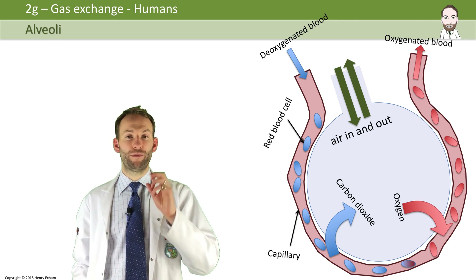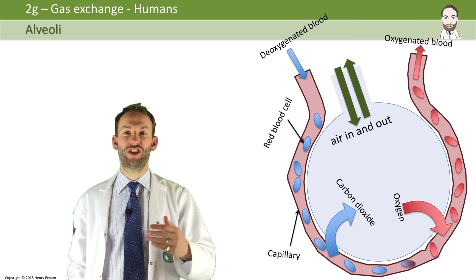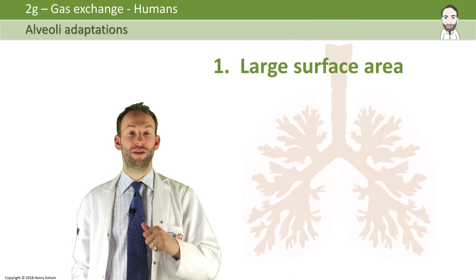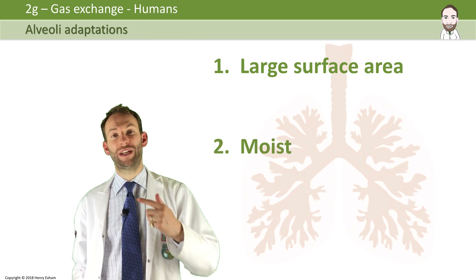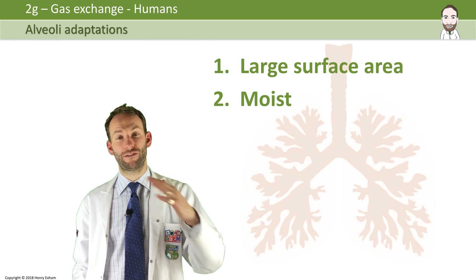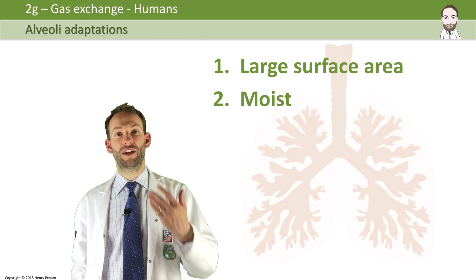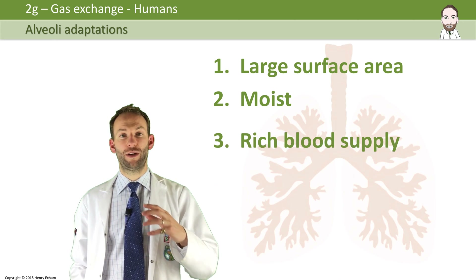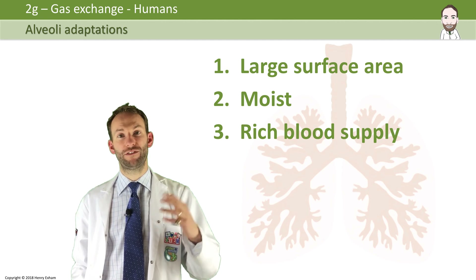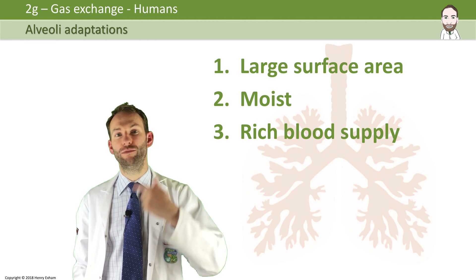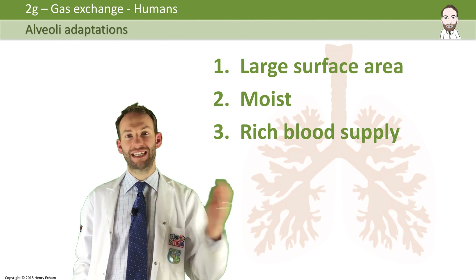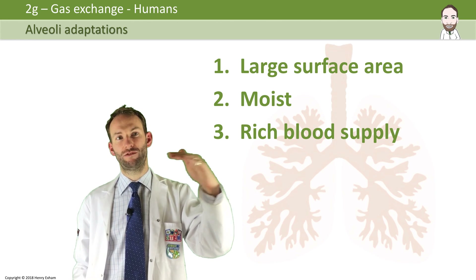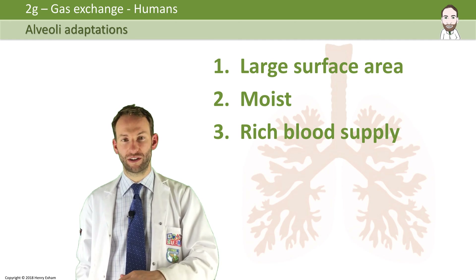Alveoli are perfectly adapted for efficient gas exchange. Number one, they've got a large surface area for diffusion. Number two, they're moist — and when it's moist, the gas diffuses through the moisture and goes even quicker. They've also got an amazing blood supply which helps to maintain a really steep diffusion gradient, so the gases are always moving because the used ones are being taken away, maintaining that concentration gradient between a high concentration of one gas and a low concentration somewhere else.